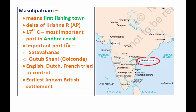Masulipatnam was the most important port in Andhra Pradesh. It was also an important port for the Satavahanas in ancient history. During the medieval period, Kutab Shahi, the ruler of Golconda, made this port a very important center for trade and commercial activity.